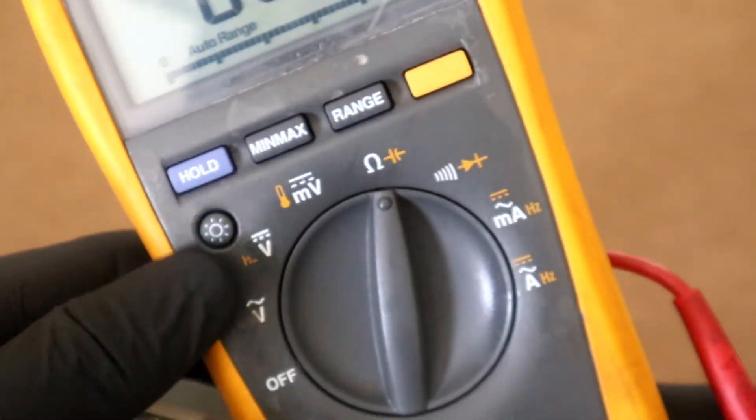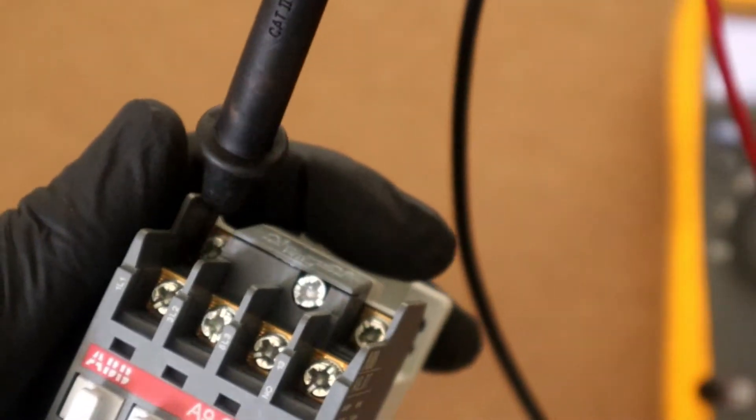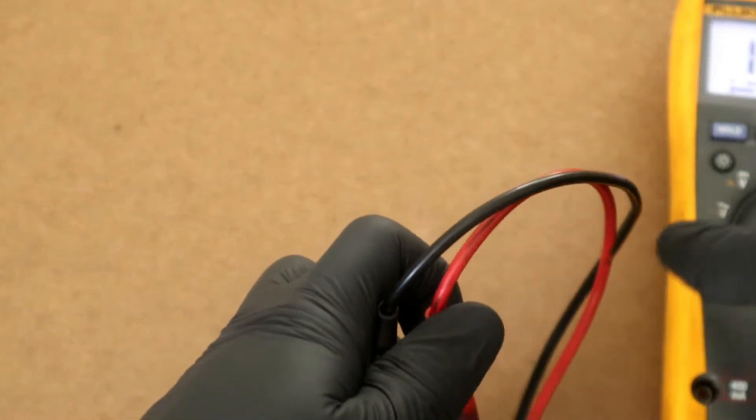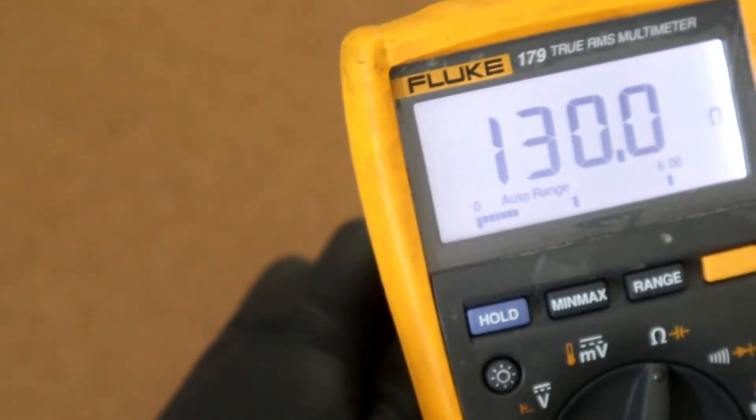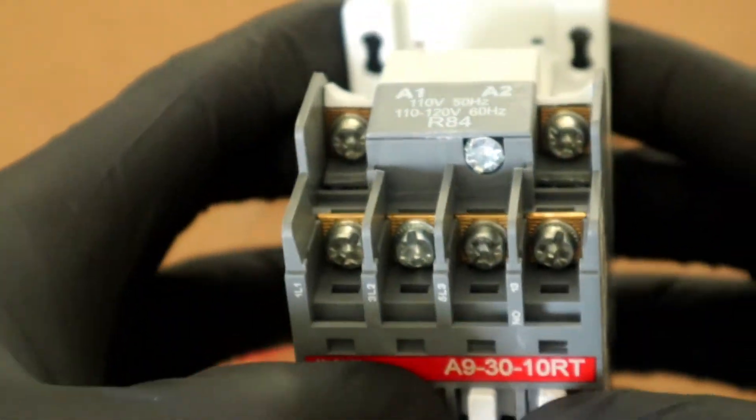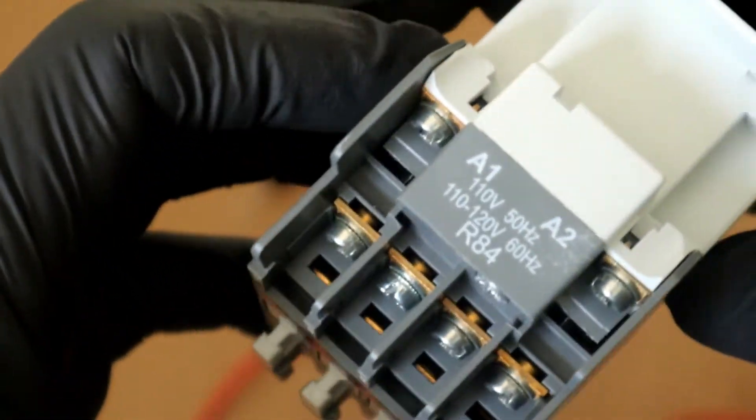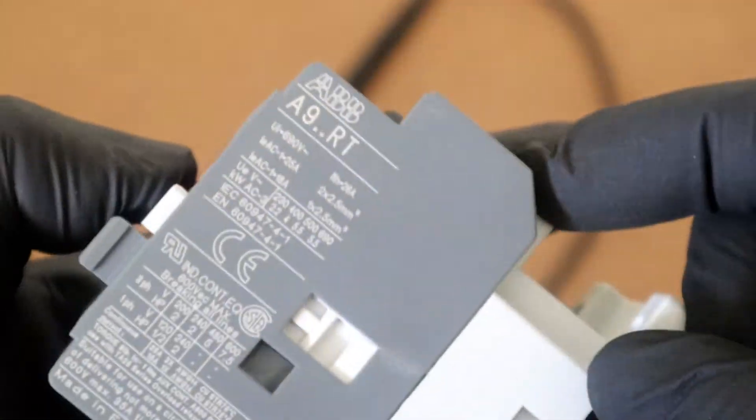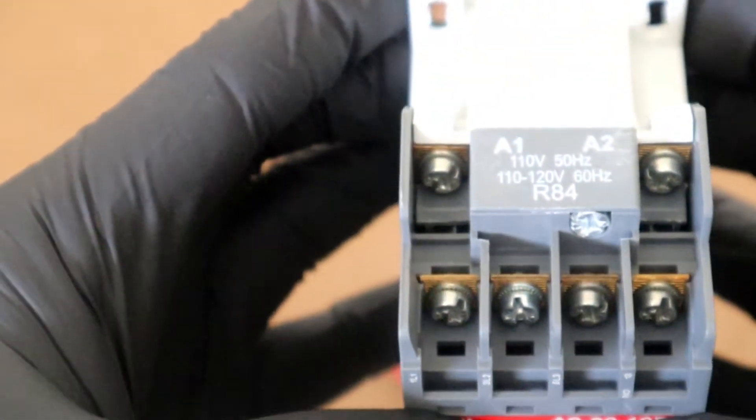We'll continue to test, verify that our multimeter is in the ohm position. We go across A1, A2 and we have 130 ohms. For a contactor like this, I've worked with a lot of them and I can testify that having that particular resistance, this coil is perfect. That's how it comes out of the box, 130 ohm coil. This contactor has passed our contactor tests and it's good to be installed in whatever circuit you need.